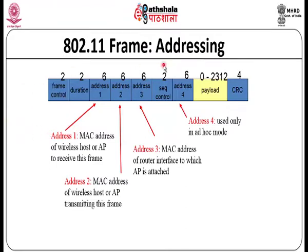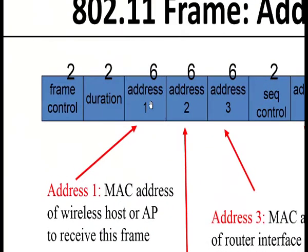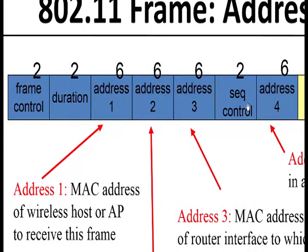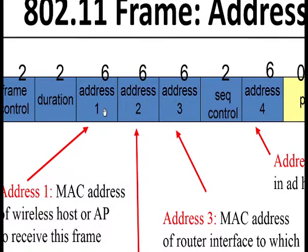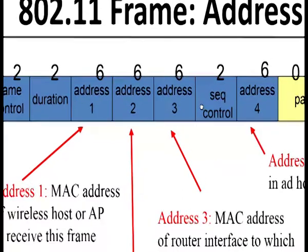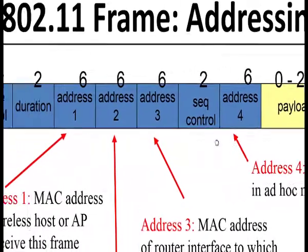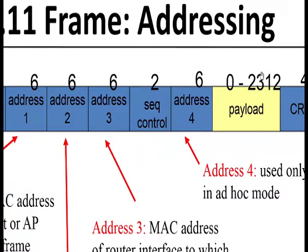Related to the frame structure of 802.11 addressing: we have a frame control, duration, and addresses 1, 2, 3, and 4 — there are 4 addresses. Normally in a wired network we have only 2 addresses, but here there are 4. We need to understand how the device connects according to the architecture — whether it is a BSS or ESS. Other information includes sequence number, CRC, and payload from the upper network layer.